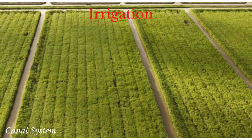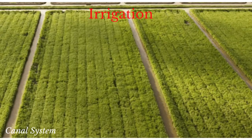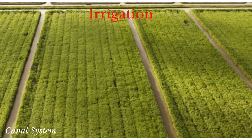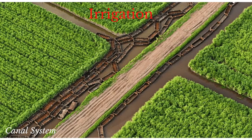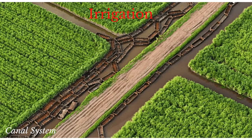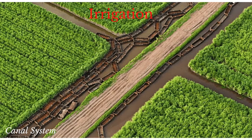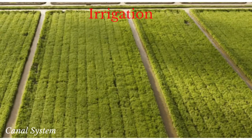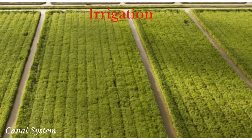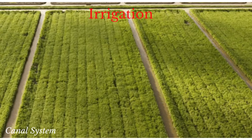Sugarcane requires a high moisture supply during most of its growth phases. Due to the variability in climatic conditions, sufficient water is not always available, and as such the fields must often be irrigated. This is done through the extensive canal system which runs through the cane fields. During times of flood, flood waters must be pumped out at pumping stations installed along the coast.